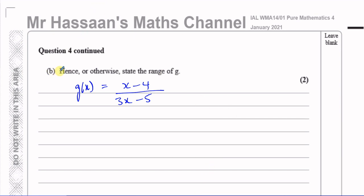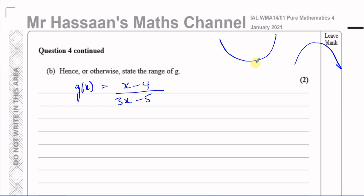And now for part B. It says: hence or otherwise, state the range of the function G. In order to state the range of a function, the best way is to try to picture what it looks like. For quadratic functions, you can see they turn upwards or downwards and see what values they can take on the y-axis. For this question, we want to find the range of this function. We know already that x has to be greater than 2 — that was one of the conditions for T to be positive.